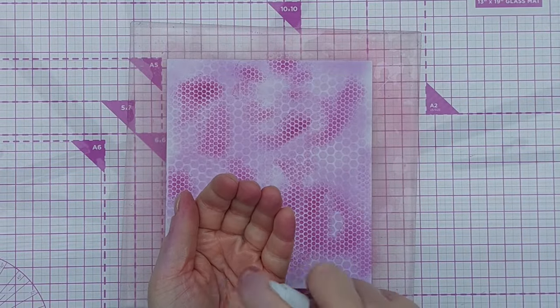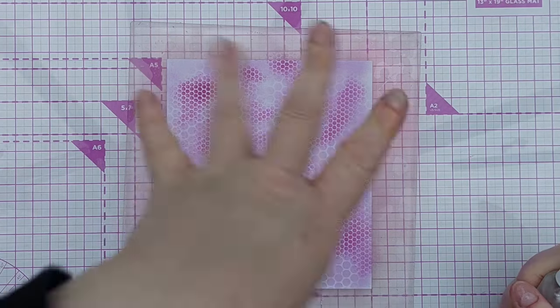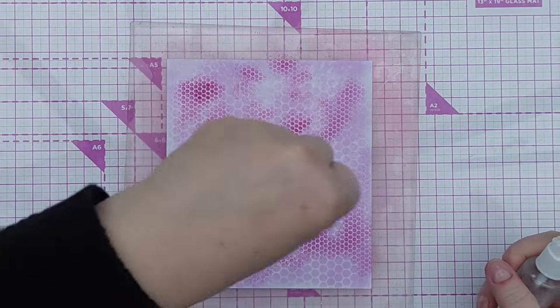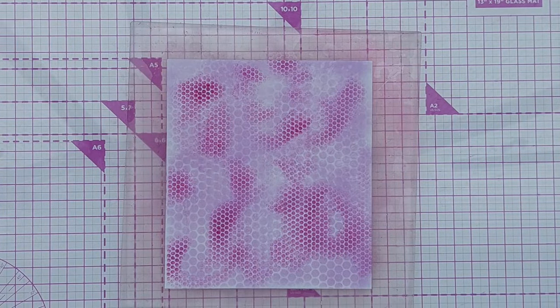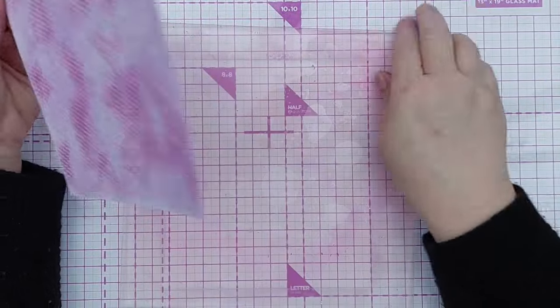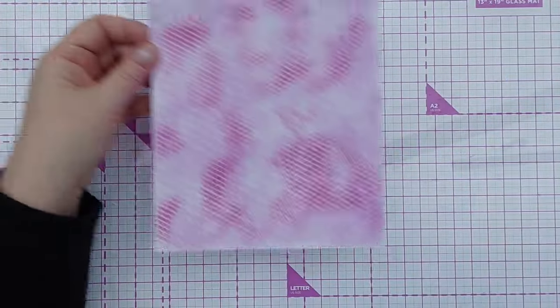Next thing I'm going to do is sputter on some water and that will lift some of the color to give even more texture and variation. I'm going to blast that with my hairdryer because the next thing I want to do is heat emboss.